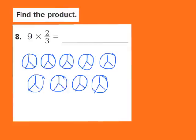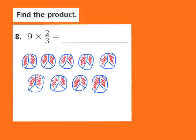Go ahead and pause your video and shade in 2 of those 3 parts in each one of your circles. Hopefully your models look similar to mine. We're going to count how many total pieces have been shaded in — we have 18 pieces shaded in. So that 18 now becomes our numerator, and we divided our circles into 3 equal parts, so that 3 is our denominator — giving us 18 thirds.